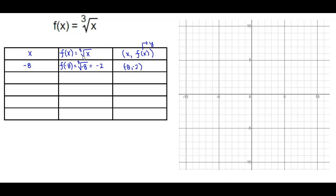The next perfect cube number we can use is negative 1. So if we take f of negative 1, and we want to take the cube root of negative 1, we ask ourselves what number do we have to cube to get negative 1? Well, the answer is negative 1. So therefore, the ordered pair is negative 1, negative 1.